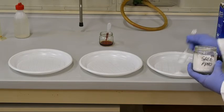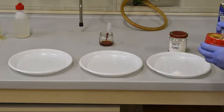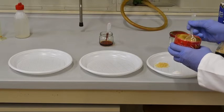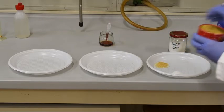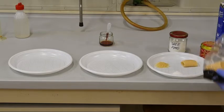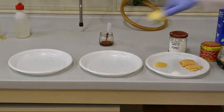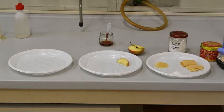Prepariamo quindi dei piatti con gli alimenti da testare. Proviamo il sale, il riso, in questo caso lo stiamo usando crudo ma si può usare anche il riso cotto. La stessa cosa vale per la pasta, possiamo testarla cruda oppure cotta. La frutta, una mela.